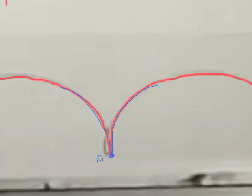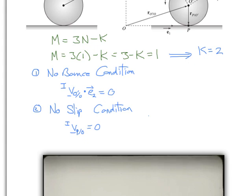The point at which the cycloid stops is exactly where the wheel makes contact with the ground. Any time there is a change in direction on the cycloid, the velocity is zero. This confirms our no-slip condition: the velocity of point P when it contacts the ground, as observed in the inertial reference frame, equals zero. We've now identified both constraints — the no-bounce condition and the no-slip condition.